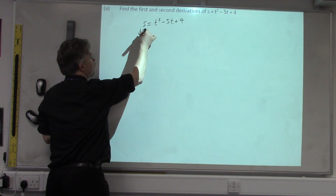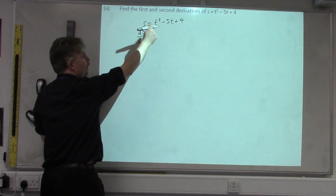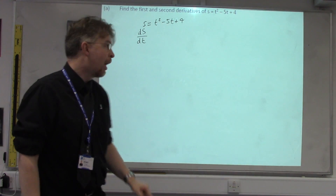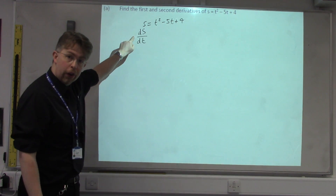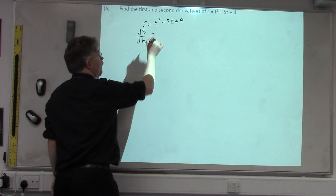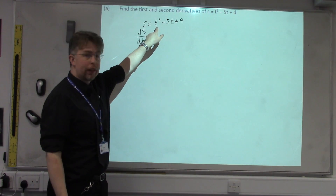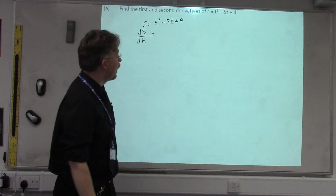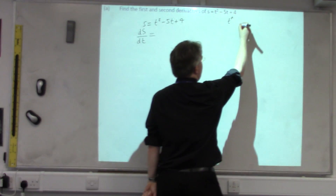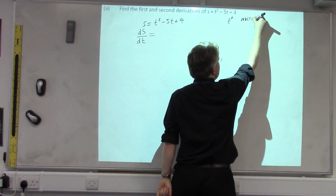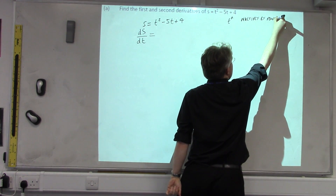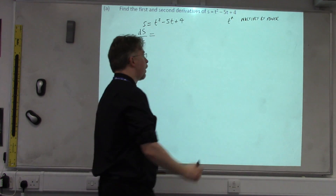There's a certain notation that follows. Since we've got s on the left-hand side and t on the right-hand side, we'd call that ds by dt. That's what we call the first derivative, or the gradient function — a function to find gradients. For something to the power, the rule is: if you've got t to the power of n, possibly with a number in front, you multiply by the power and then take one away from the power.